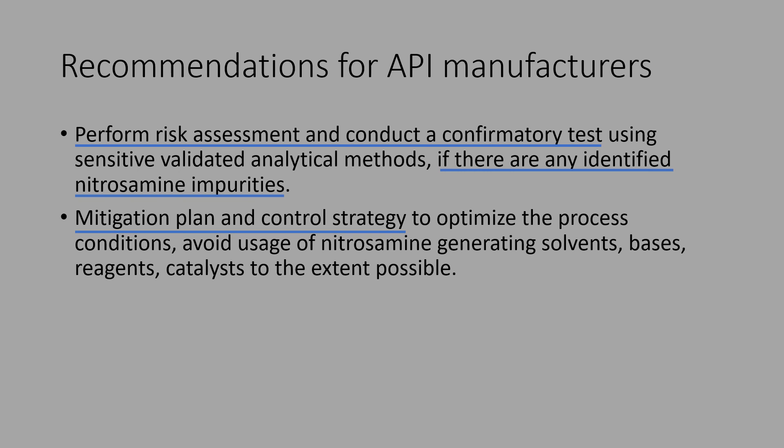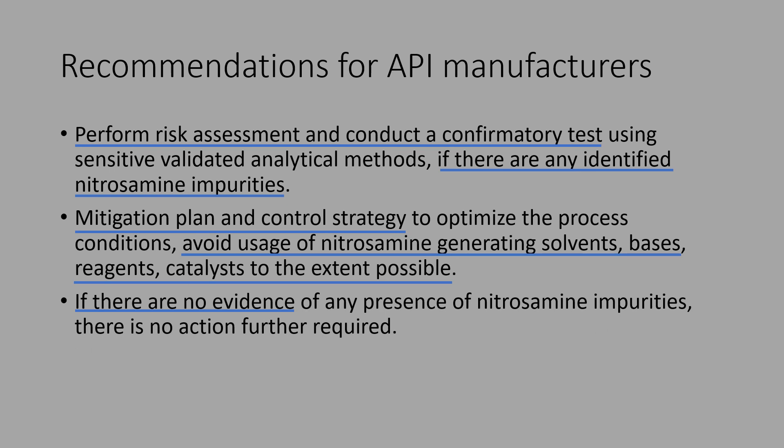A mitigation plan and control strategy to optimize process conditions should be developed. Avoid usage of nitrosamine-generating solvents, bases, reagents, and catalysts to the extent possible. The mitigation plan may include control of process parameters to avoid formation of nitrosamine impurities, and usage of alternative solvents that may not generate nitrosamine impurities. If there is no evidence of any presence of nitrosamine impurities or the confirmatory test is negative, there is no need to take further action. All this information has to be documented fully for review.